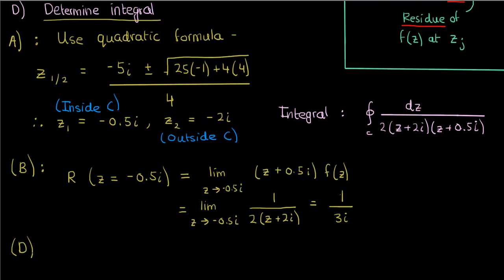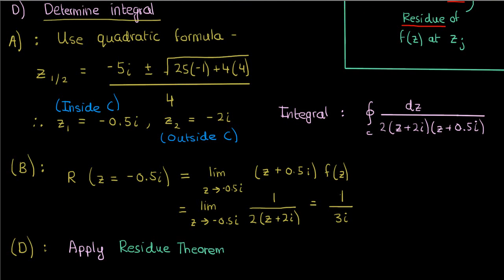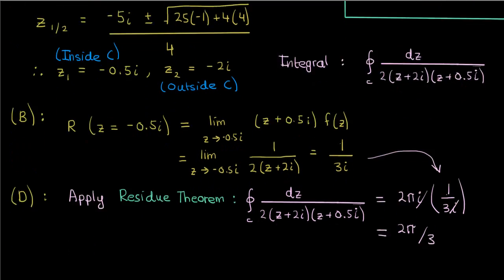And this is the only residue we're concerned with. If we now apply the residue theorem, we'll find that the integral over C of dz over 2 times z plus 2i times z plus 0.5i equals 2πi times 1 over 3i, which equals 2π over 3. So therefore, we can conclude that the integral from 0 to 2π of 1 over 5 plus 4 sine theta is just 2π over 3.